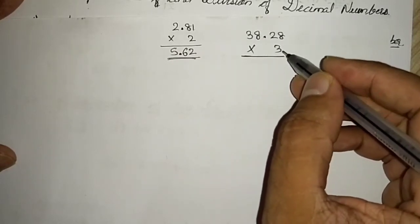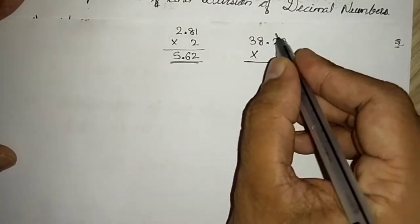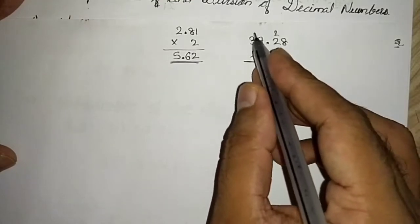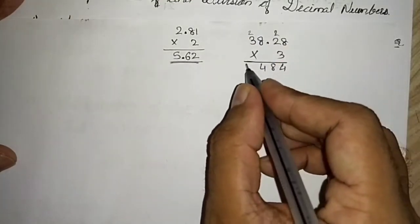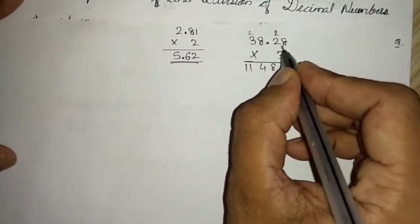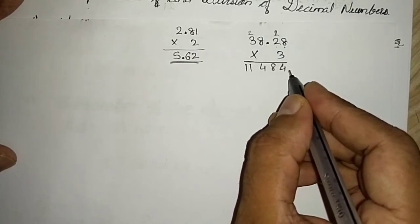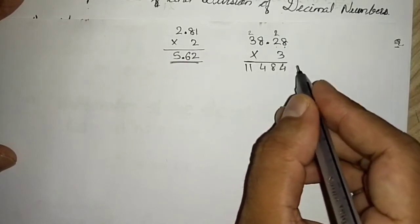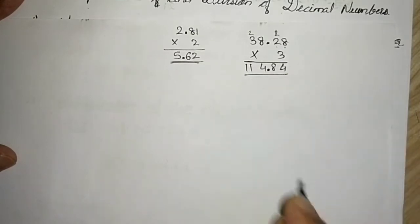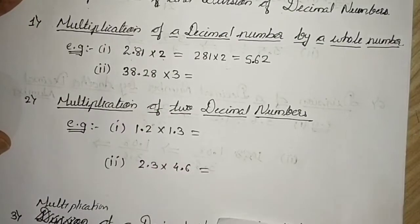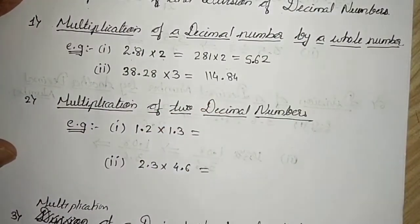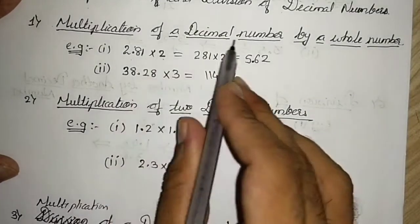Multiply: 8 threes are 24, write 4 carry 2; 2 threes are 6 plus 2 is 8; 8 threes are 24, write 4 carry 2; 3 threes are 9 plus 2 is 11. Now count the decimal places: 1 and 2. From the right side count 2 places and place the decimal point. The answer is 114.84.